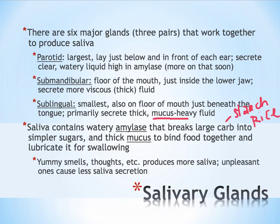Saliva can actually be produced by the presence of food. Generally, if it's a food that you like or think smells or tastes good, more saliva will be produced, and unpleasant ones cause less saliva. That's why sometimes when you're eating something you don't like, you find it really difficult to swallow, because your body is actually producing less saliva, and less saliva makes it harder to swallow. Even the thought of foods that you find appealing can cause more saliva to be produced.